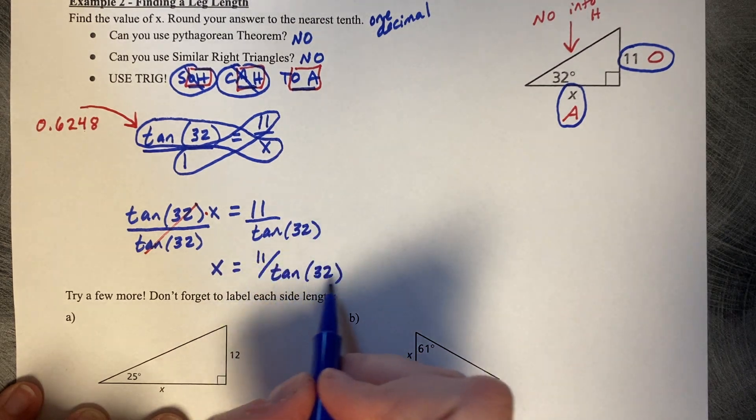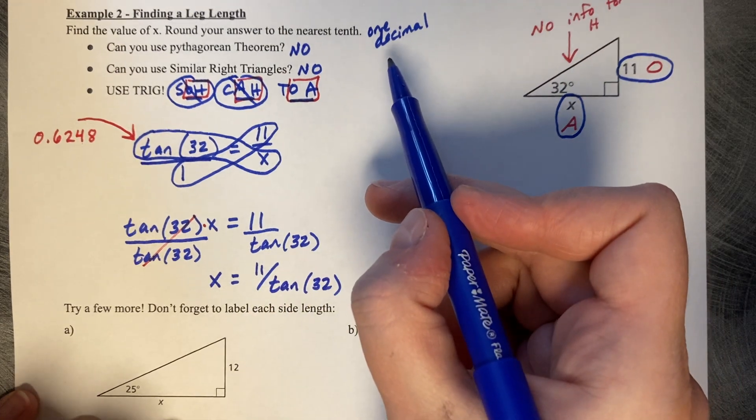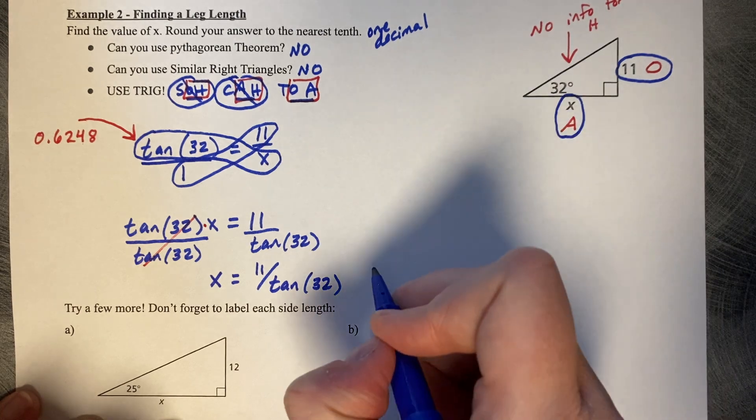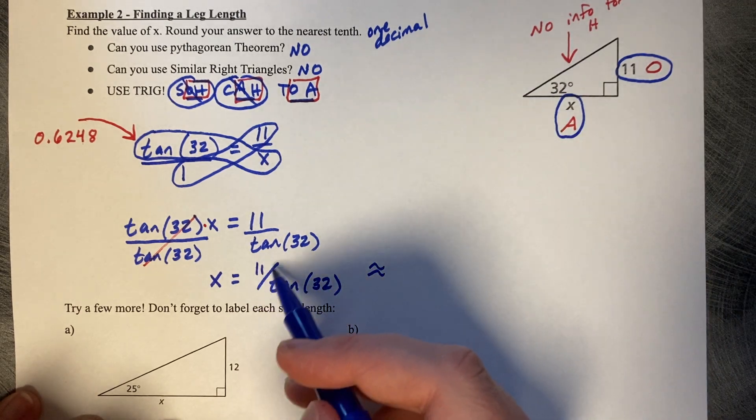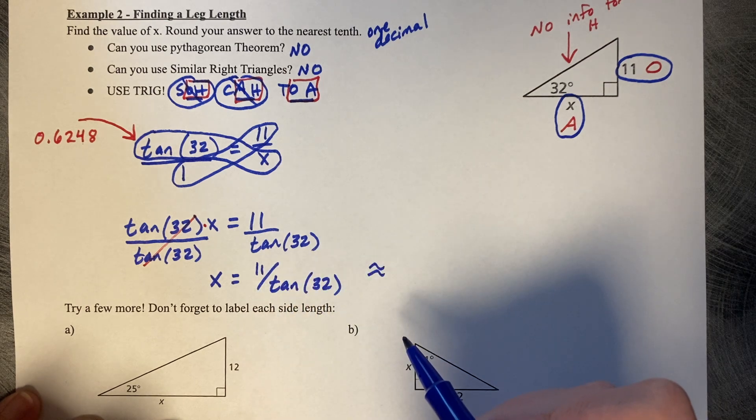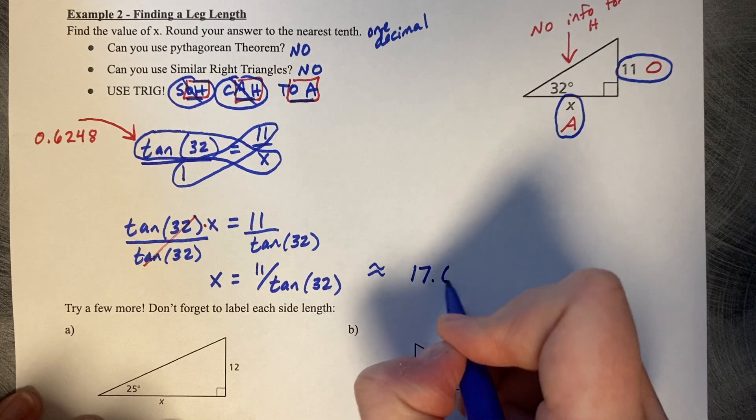This is an exact answer, 11 divided by the tangent of 32, but it wanted us to round our answer to the nearest one decimal place. Type into your calculator 11 divided by the tangent of 32, which is going to get you 17.6.